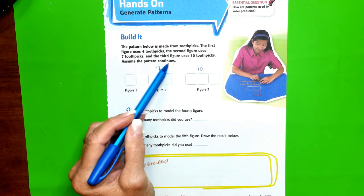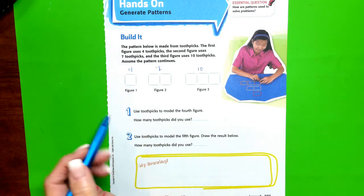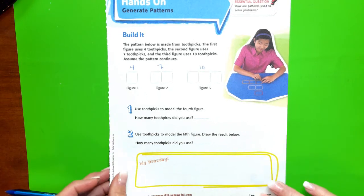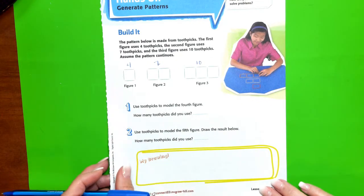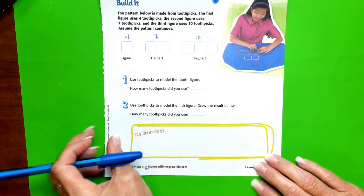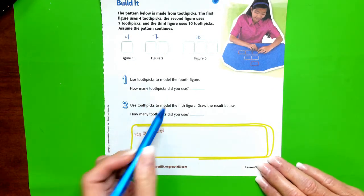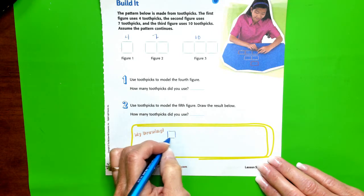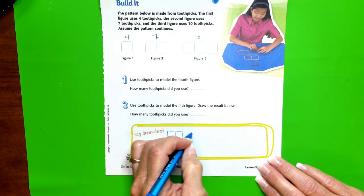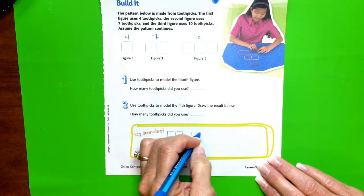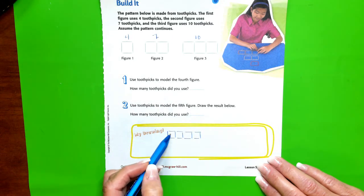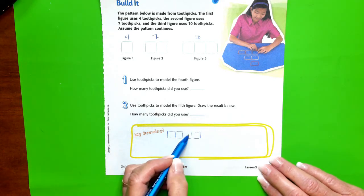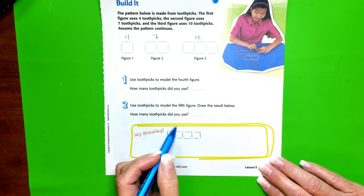Assume the pattern continues. Use toothpicks to model the fourth figure. How many toothpicks did you use? I'm going to draw my fourth figure: one, two, four, three. Okay, so there's the first figure, the second figure, the third figure, and now I've drawn the fourth figure.